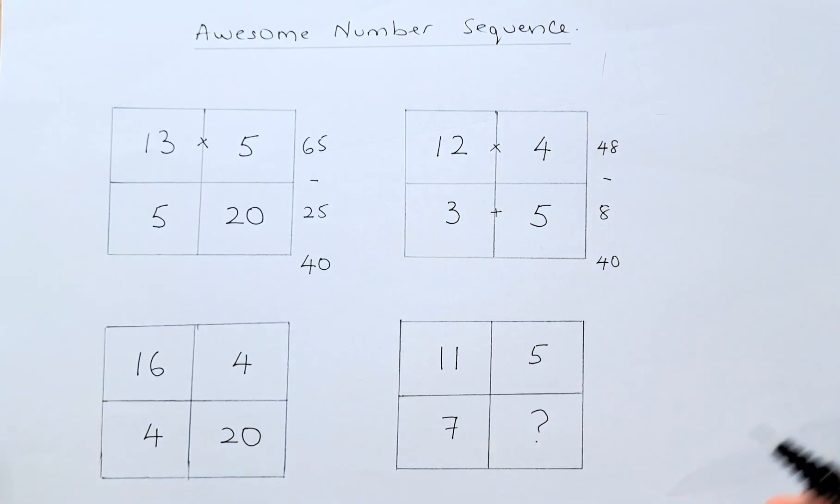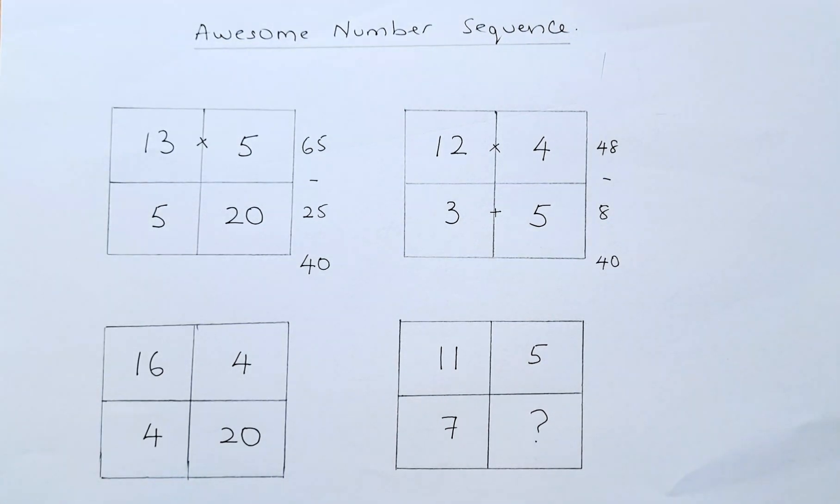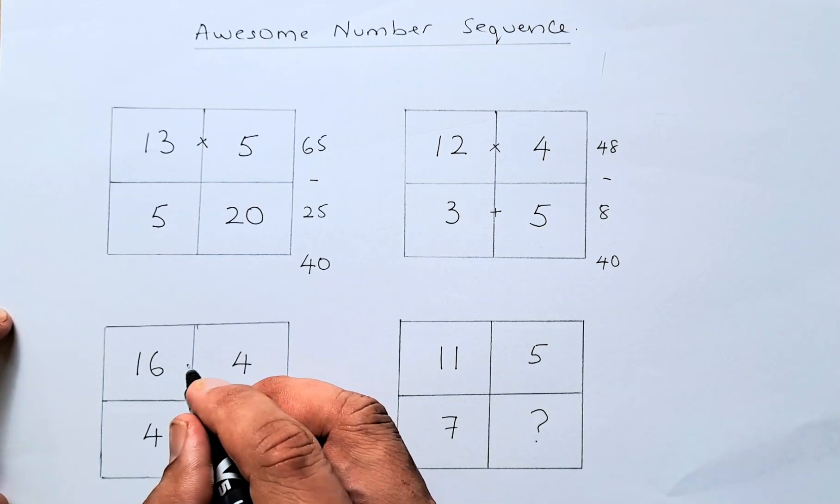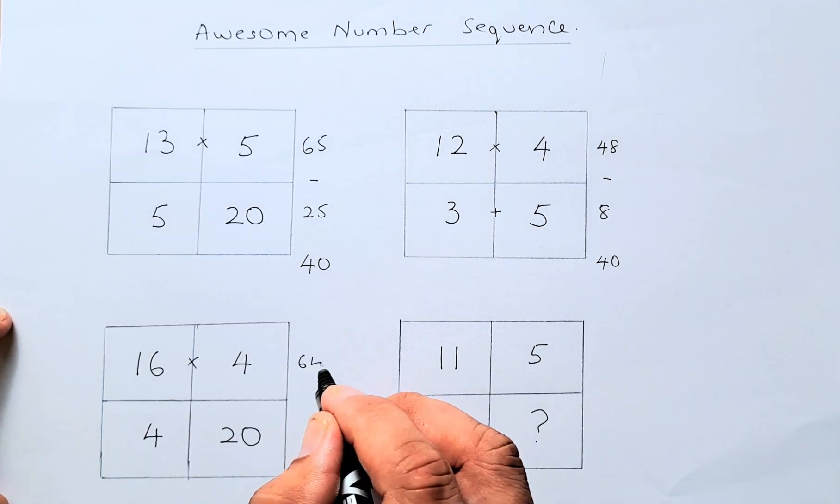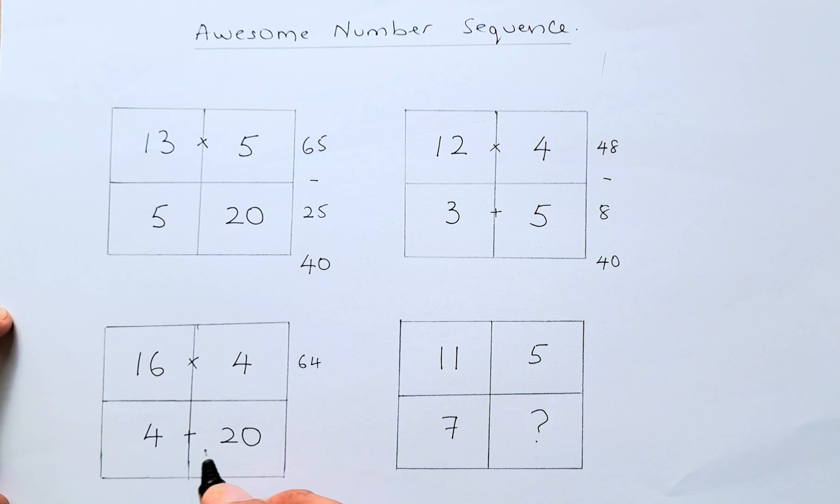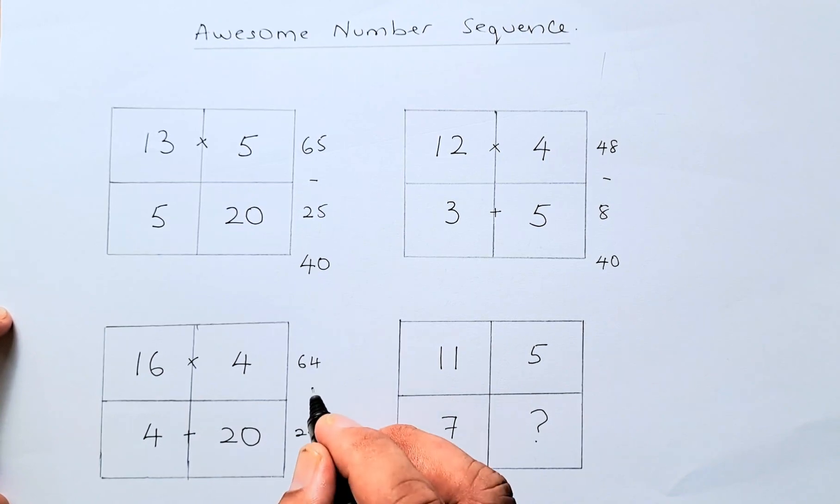For the third box, 16 times 4 is 64. Then 4 plus 20 is 24. When you subtract them, 64 minus 24 is 40.